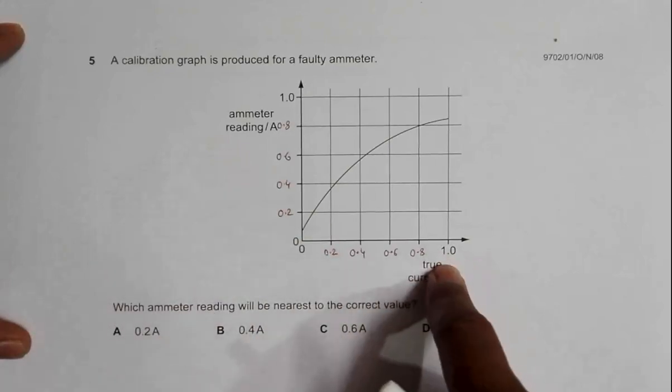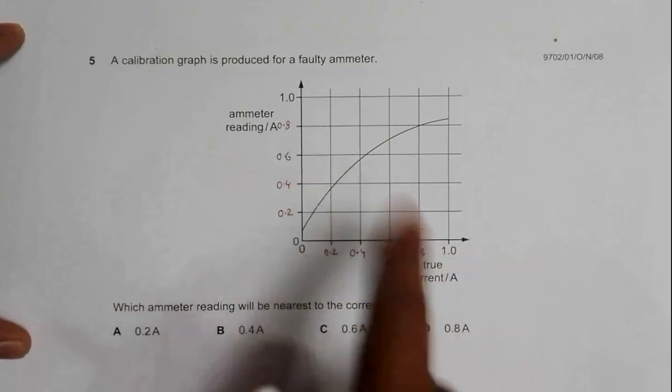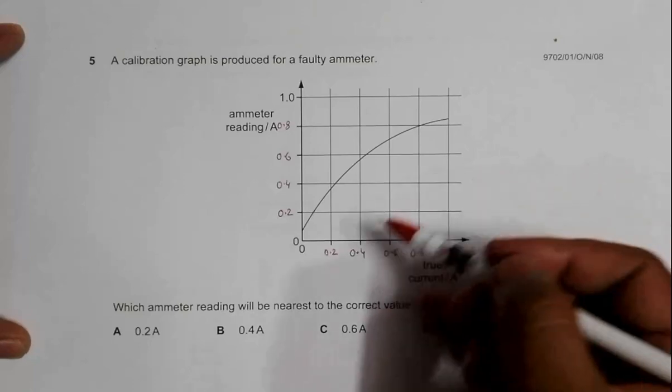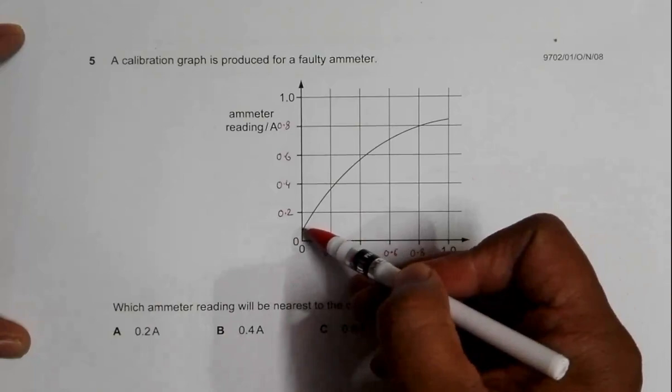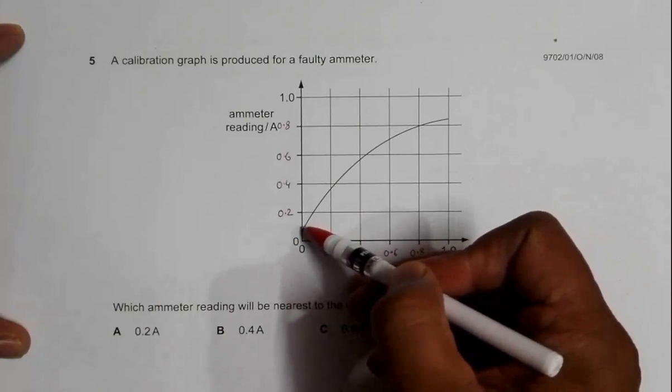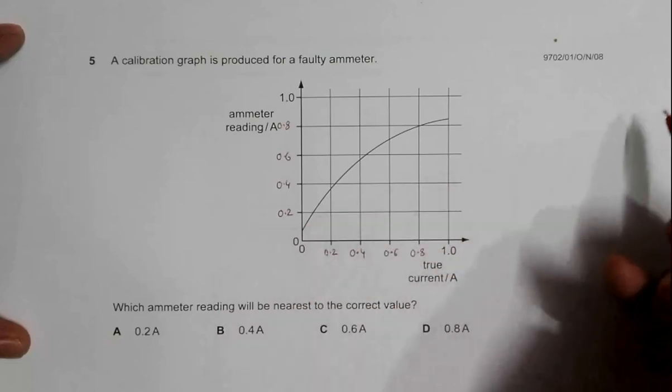If you go to this reading, for example when true current is zero, the ammeter reading is about 0.1 or 0.08 ampere. So this is not correct. Similarly, if we have 0.2 ampere...